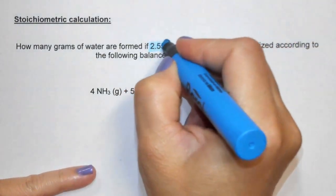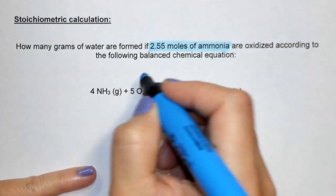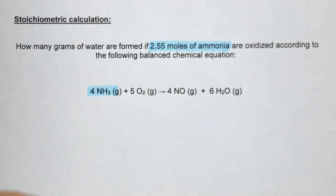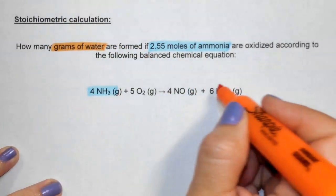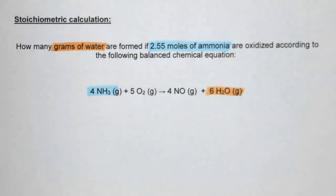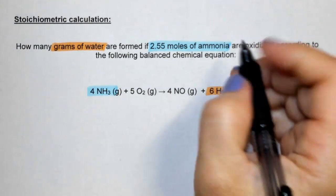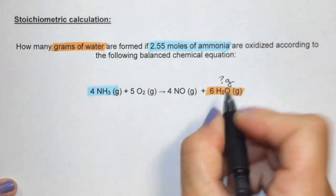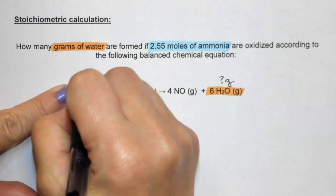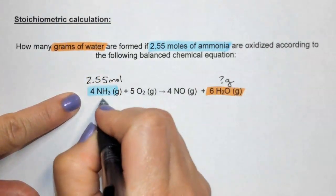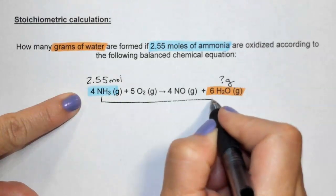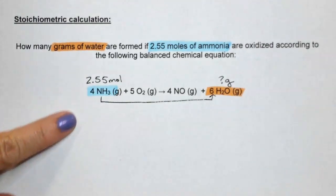We are given 2.55 moles of ammonia in our equation. It asks how many grams of water, so we're looking for grams of water, which is this part of our equation. We're given 2.55 moles of ammonia to start, so we're going to switch from ammonia to water in our problem.